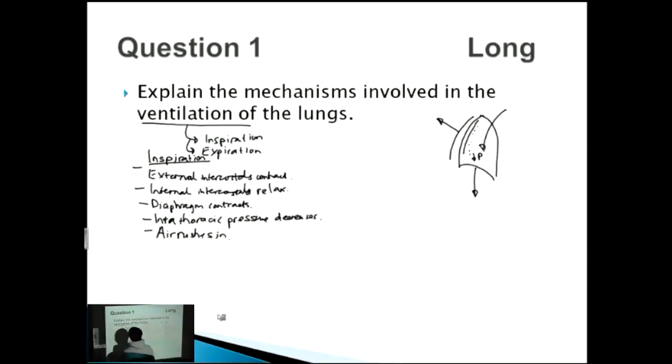Good that's five marks already just for inspiration and now the next thing we'll do is expiration - it's exactly the opposite. So in expiration what will happen is the external intercostal muscles relax, the internal intercostal muscles will pull out, the diaphragm will relax as well. The air pressure will increase and if pressure increases then it pushes the air out.